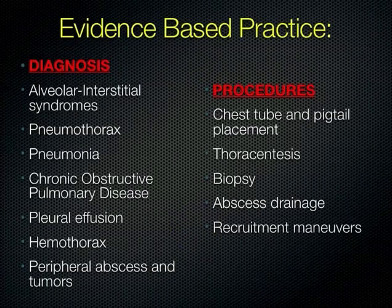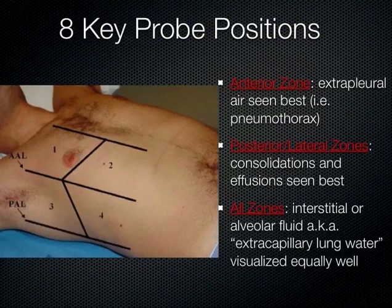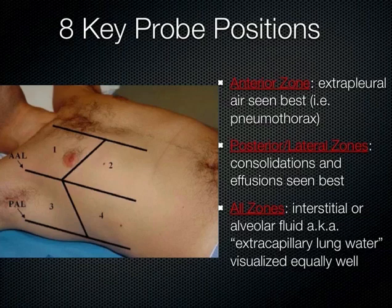There are some key probe positions which you'll be practicing today in your practical sessions, but it's also a good habit to look at all eight key probe positions on the chest — four on each side. Delineate the chest by the sternum, the anterior axillary line, and the posterior axillary line, dividing the chest into four areas on each side. You want to look at a representative area in each segment so you can feel you've had a good overall picture of what's going on with the chest.